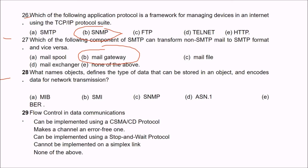Question 28: what named object defines the type of data that can be stored in an object and encodes data for network transmission? The answer is B — SMI (Structure of Management Information), because SMI is the named object that defines the type of data that can be stored and encodes data for network transmission.